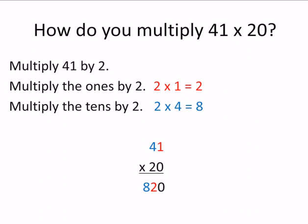You see that 0 goes at the end there, because we're not really multiplying by 2 — we're multiplying by 20. So it's really 20 times 1. That's why the 2 goes in the 10's place. So you just write your numbers in order there. 820 is the answer.